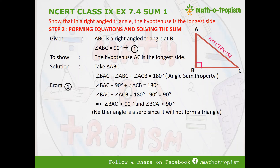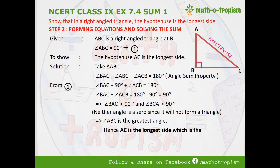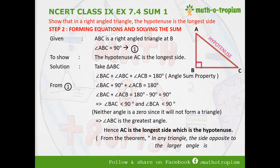From this we can show that angle ABC is the greatest angle. Since it is the greatest, the side opposite to it — that is, AC — is the longest side. From the theorem, in any triangle the side opposite to the larger angle is longer. Thus, we have shown that the hypotenuse AC is the longest side in a right angled triangle.